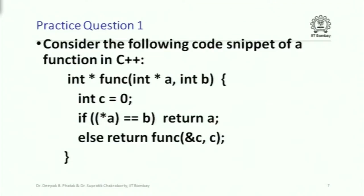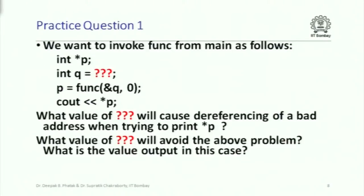Here is the first practice question. There is a function that takes an integer pointer and an integer, does some operations, and calls itself recursively. We want to invoke this function from main with an integer pointer variable p and an integer variable q initialized to some value, call the function func in a specified manner, and then print the value of star t.